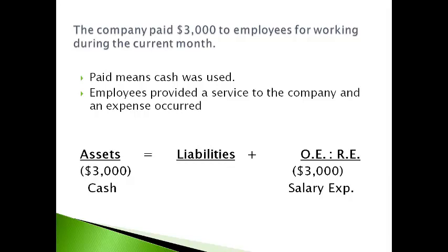In this transaction, the company paid the employees for working during the current month. The company has less cash and has more salary expense. Expenses reduce profits and are always reported with a negative to the owner's equity side. The accounting equation is in balance.